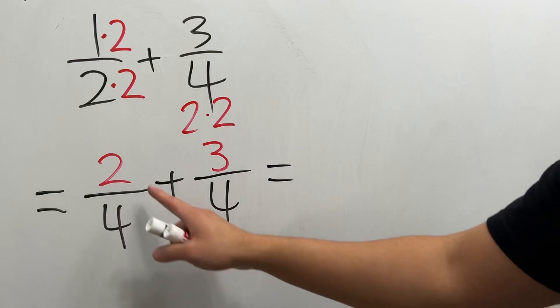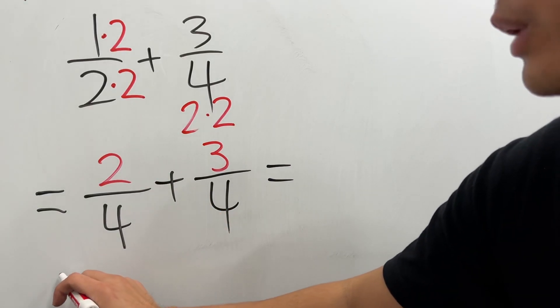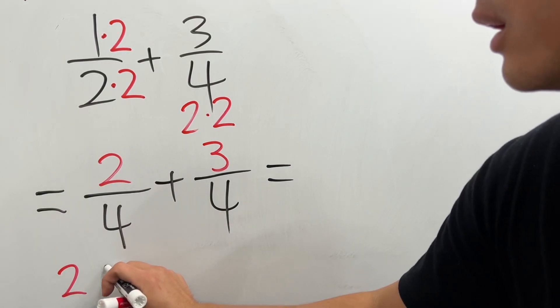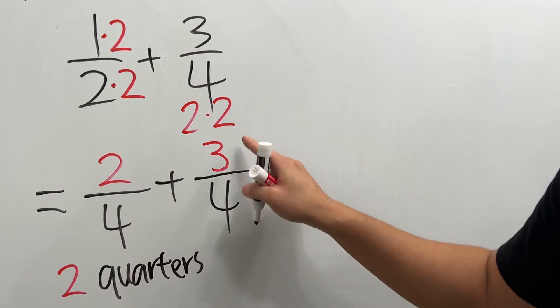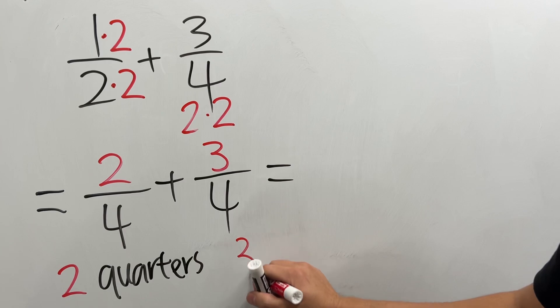Why can we do that? It's because this right here—we have 2 quarters, like the actual quarters that you use in the vending machines. And this right here—we have 3 quarters.